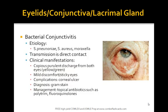In bacterial conjunctivitis, you have copious purulent discharge from both eyes, which can be yellow or green. There's mild discomfort. Patients can develop a corneal ulcer. The diagnosis is made by Gram stain. The organisms causing bacterial conjunctivitis are Strep pneumoniae, Staph aureus, or Moraxella.